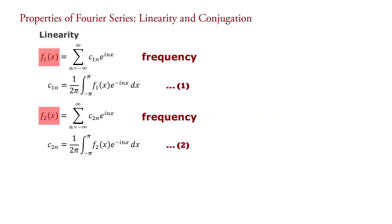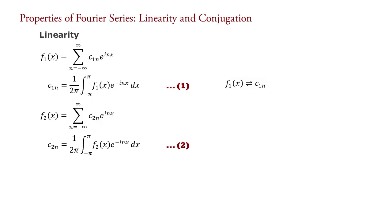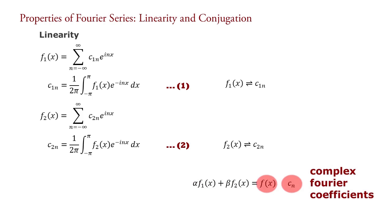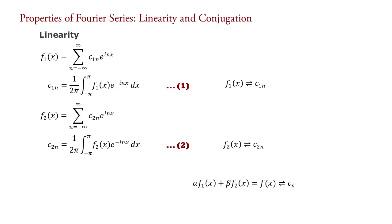Because the frequency of both signals is the same, there is no change in the part e raised to inx. Hence we can say that complex Fourier coefficient c1n corresponds to Fourier signal f1(x) and complex Fourier coefficient c2n corresponds to Fourier signal f2(x). Now if we multiply signal f1(x) by alpha and signal f2(x) by beta and then add them, we get a new signal f(x), that is alpha f1(x) plus beta f2(x) equals f(x), where alpha and beta are any numbers. Let cn be the corresponding complex Fourier coefficient of new function f(x); then alpha f1(x) plus beta f2(x) equals f(x) corresponds to cn — say equation 3.